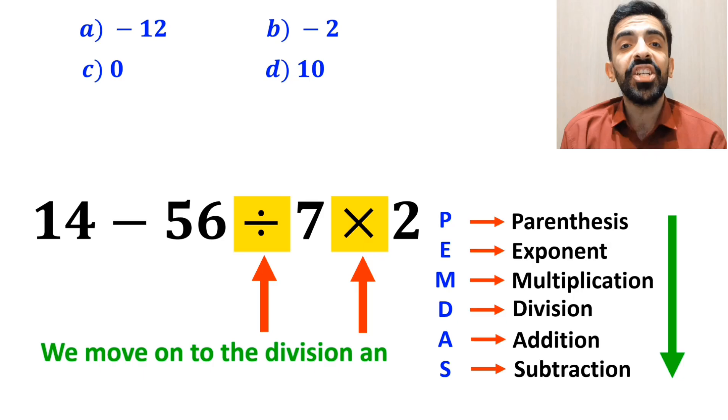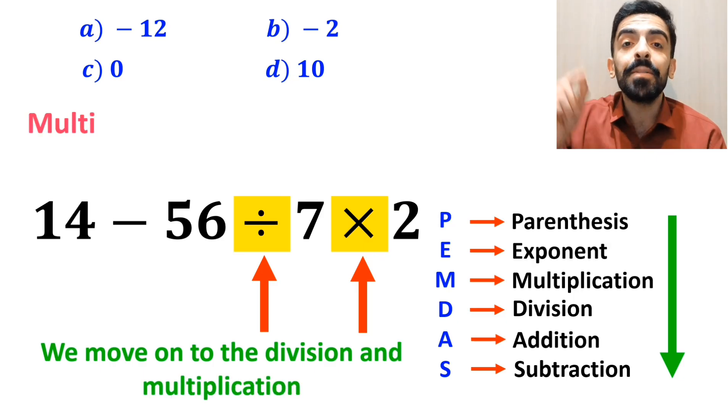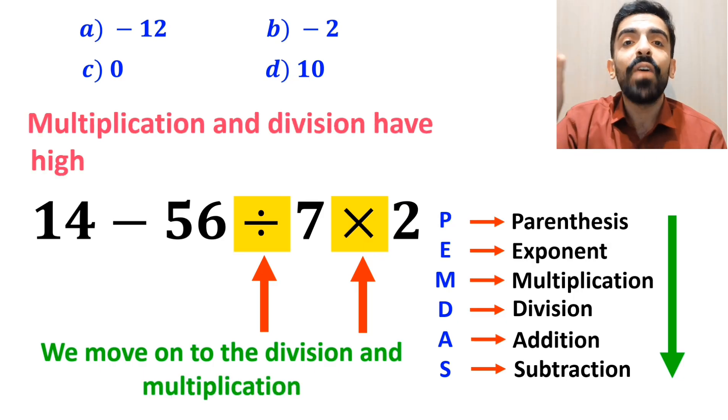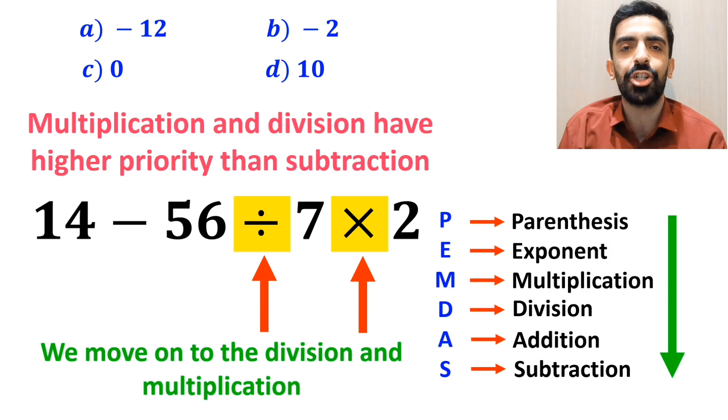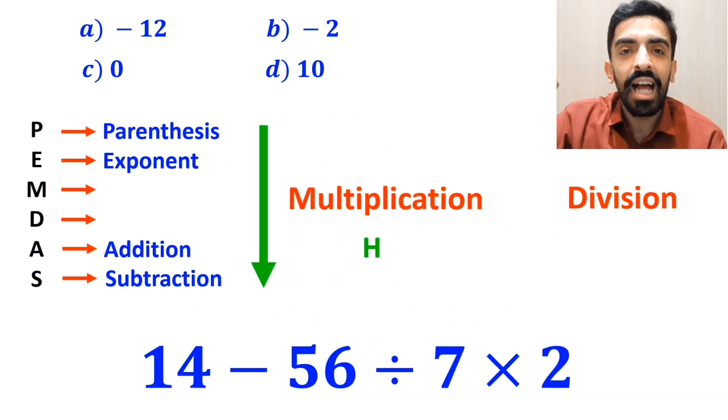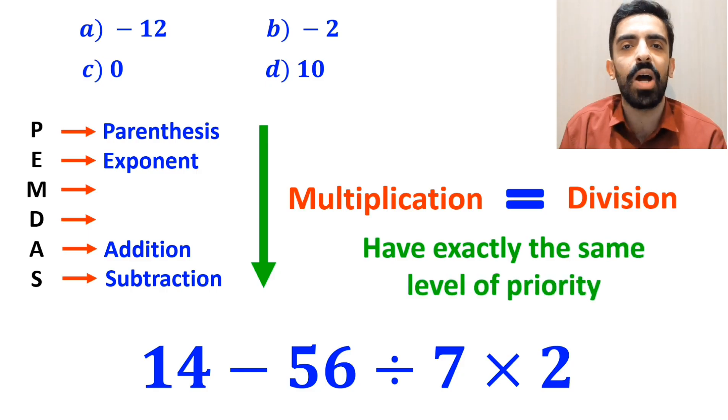In the next step, we move on to the division and multiplication, because multiplication and division have higher priority than subtraction. However, it's very important to note that multiplication and division have exactly the same level of priority.